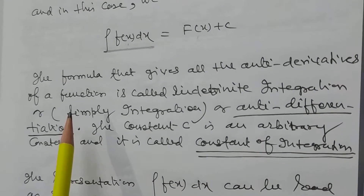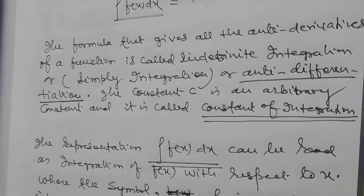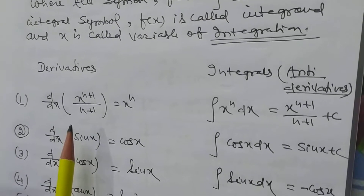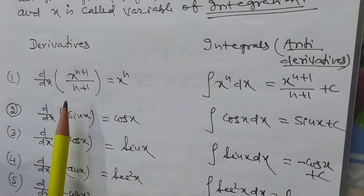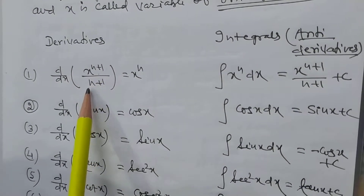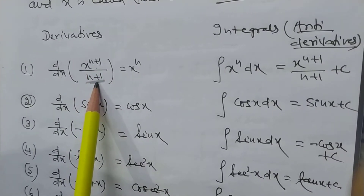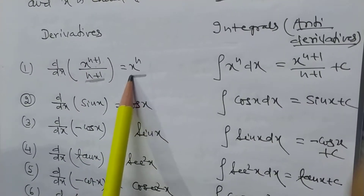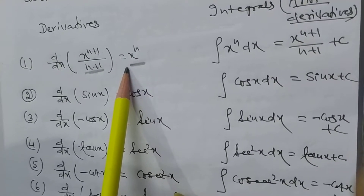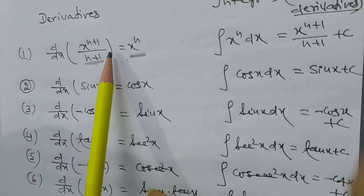We can define integration in this way. The differential coefficient of x^(n+1) is (n+1). The differential coefficient of x^(n+1)/(n+1) is x^n. So the integration of x^n is x^(n+1) divided by (n+1).